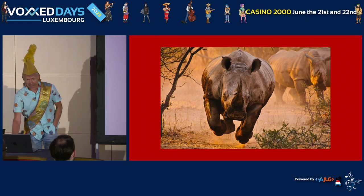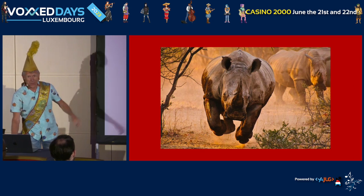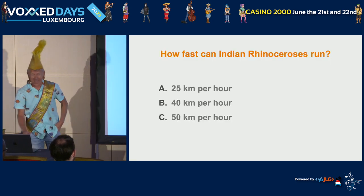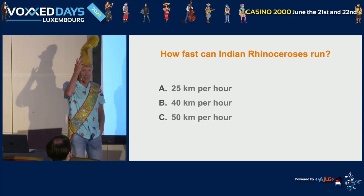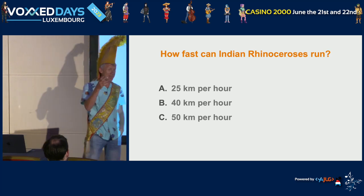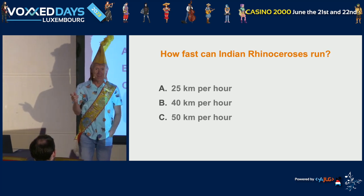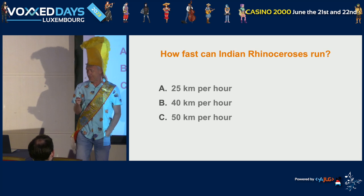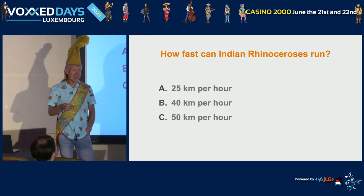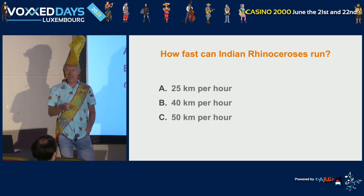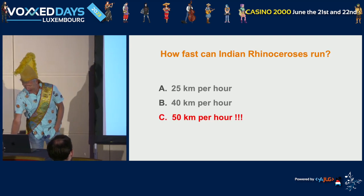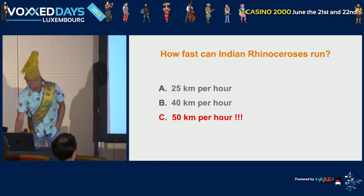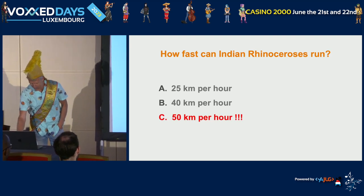How fast can a rhino run, do you think? Is it 25 kilometers an hour? 40? Nobody? The maximum — 50 kilometers an hour. It's unbelievably fast.